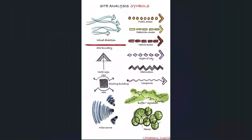Here are some site analysis symbols that can help. Wind is one, and it's also going to be important to always put your north orientation, because this is going to help us position the site and know where east, west, and the sun are coming from. We can also identify noise, type of vegetation, and viewpoints.